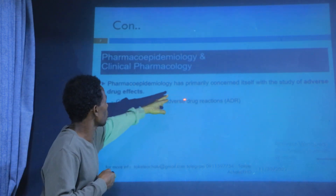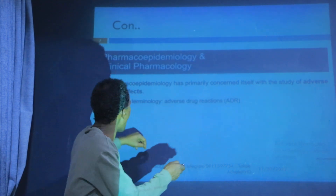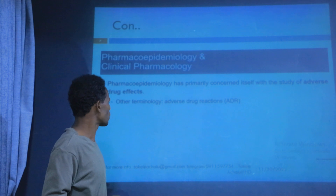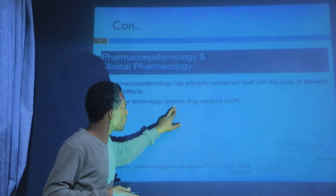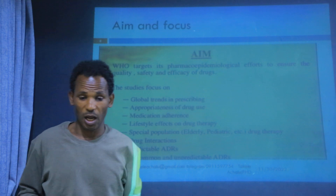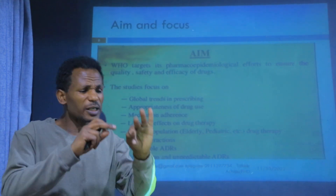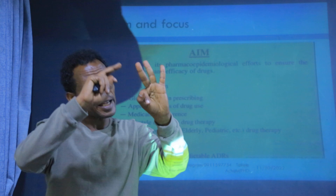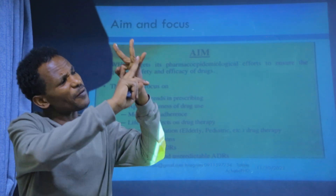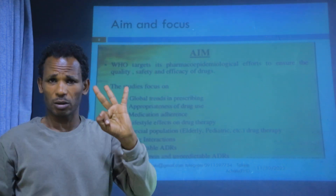Pharmacoepidemiology has primarily concerned itself with the study of adverse drug effects — in other words, adverse drug reactions. In epidemiology, there are three aims. The three aims for epidemiologists are: safety, quality, and efficacy of the drug.